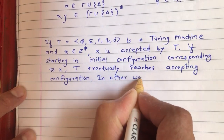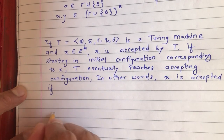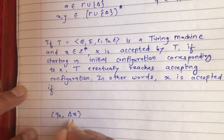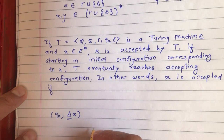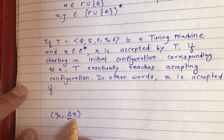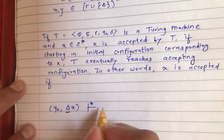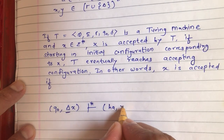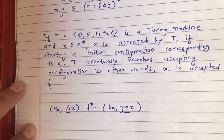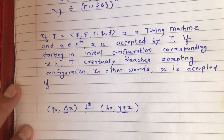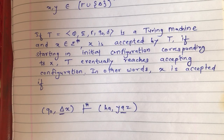In other words, X is accepted if we start from q0, place X on the tape, with the tape head initially pointing to the blank before the string. After applying some set of transitions, if we enter into the accepting state, we say the string is accepted. Importantly, it is never required that X has to be processed completely — we can enter the accepting state hA even before processing all of X.